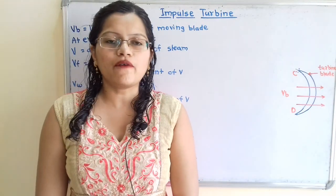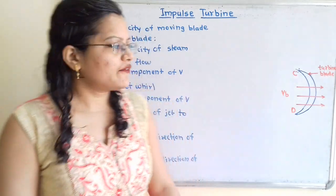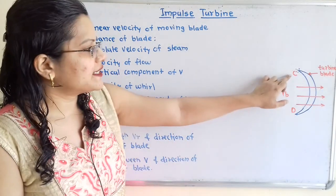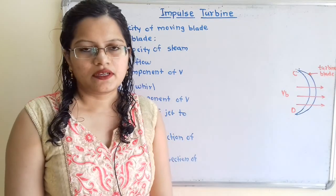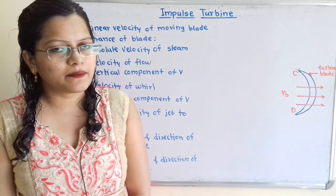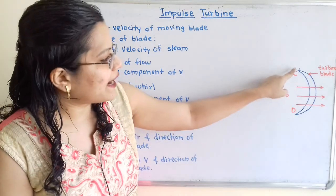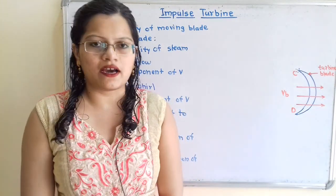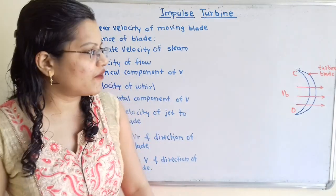Let us understand how to draw velocity triangles of moving blade for an impulse turbine. Here is the turbine blade which has linear velocity Vb. Point C is the entrance point of the steam jet and point D is the exit point of the steam jet for this blade. The steam jet enters the turbine blade at point C tangentially with absolute velocity V.